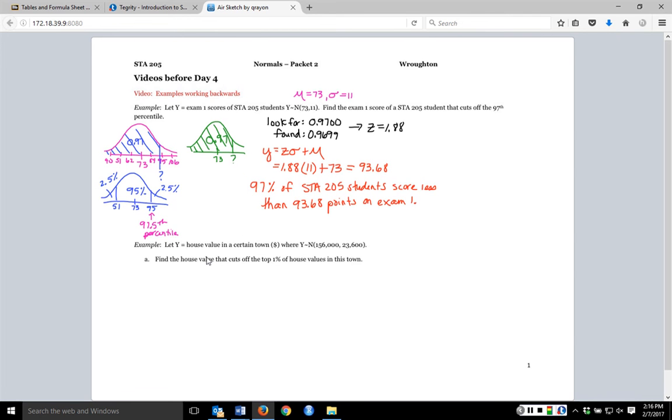Another example. This time looking at house prices. We are given our mean but we're given our standard deviation. So again, I'm going to start with my picture. So I start at my mean at 156,000. So subtract off my 23,600 each time I go to the left here and adding it every time I go to the right.